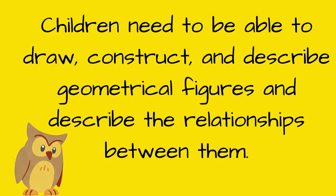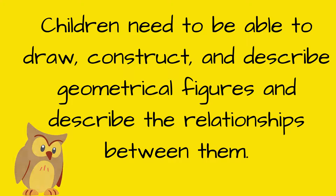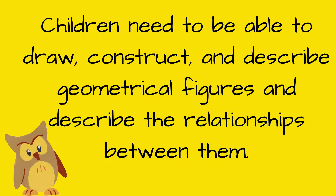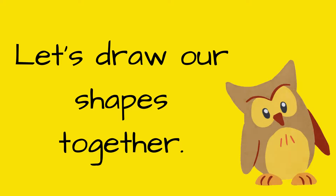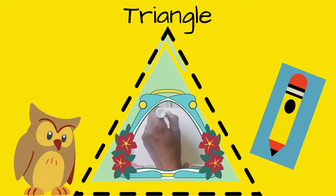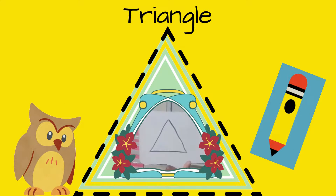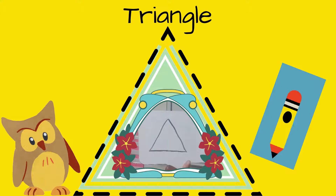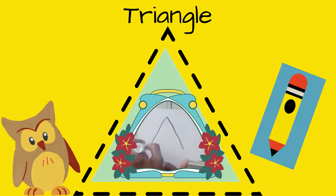Children also need to be able to draw, construct, and describe these geometrical figures, and should be able to describe the relationships between them. We're going to work on our shapes and draw them today, boys and girls. I hope you have your wipe-off board and marker. Let's start at the top of this triangle — we're going to draw in the angle, then go back to the top and draw the other angle, and our line straight across. Three sides for the triangle.